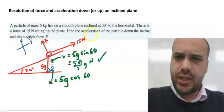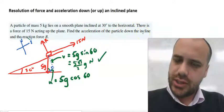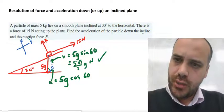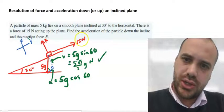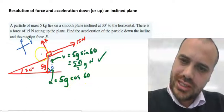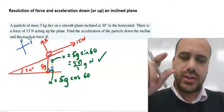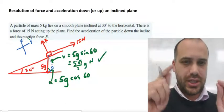Alright, we want to find the acceleration of the particle down the inclined plane. Alright, so what do we know? We know that there's 15 newtons of force being exerted in this direction and we know that there's 5g cos 60 newtons of force being exerted in that direction.